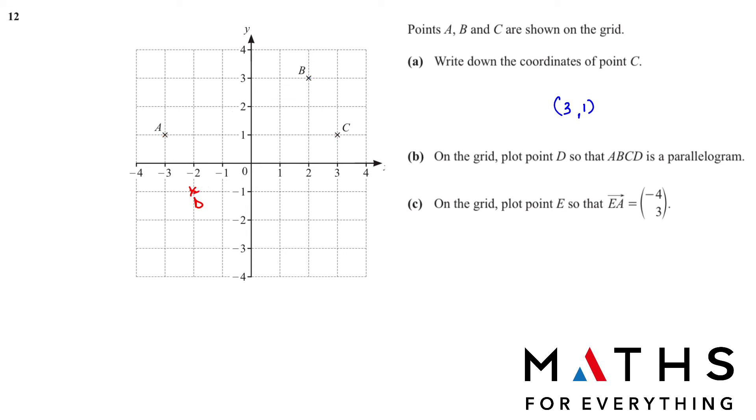Moving to part C. On the grid plot point E so that EA is equal to negative 4, 3. We have to find E. E is not given to us. But before we do that, let me explain to you the column vector. The top number represents X and the down Y. If our X is positive, we move to the right. If X is negative, we move left. If Y is positive, we shift up. If Y is negative, we shift down.